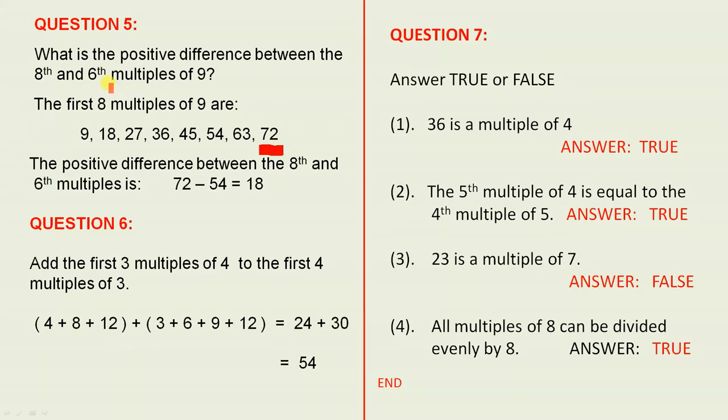The sixth multiple: 1, 2, 3, 4, 5, 6—9 × 6 = 54. So we're after difference, which means take away. So 72 - 54 = 18.